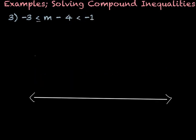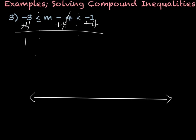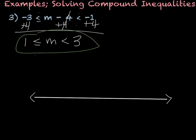This next one we have to look at a little differently because there's something with the variable. It's negative 3 is less than or equal to m minus 4, which is less than or equal to negative 1. I need to get m by itself, so I have to add 4 to all the parts — on every side of the inequality symbols — giving me 1 is less than or equal to m, which is less than 3.